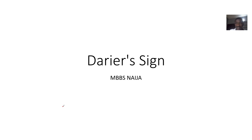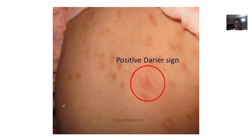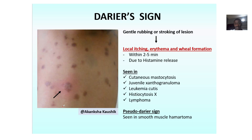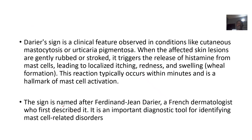We're quickly looking at a very simple concept — this is what is known as Darier's sign. Darier's sign is just something that you see and it helps make a diagnosis. It is a clinical feature observed in conditions like cutaneous mastocytosis and urticaria pigmentosa, which have already been spoken about.